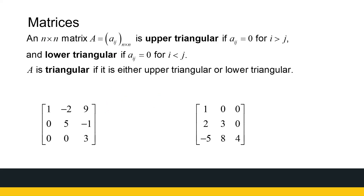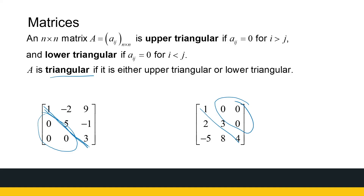The last type of matrix we're going to look at is a triangular matrix. A triangular matrix has zeros on one of the triangles — it doesn't matter what's on the diagonal, but one of the remaining triangles has zeros. We have an upper triangular matrix and a lower triangular matrix. If zeros are on both triangles, it's also a triangular matrix. Triangular matrices will come back again. In the next video, we're going to look at some operations on matrices and what we can do with them.